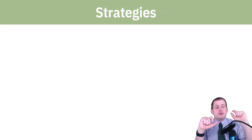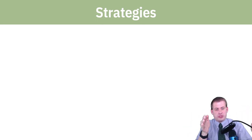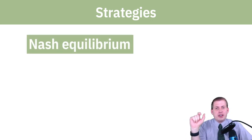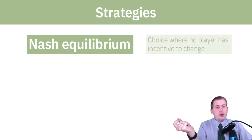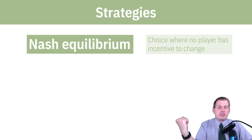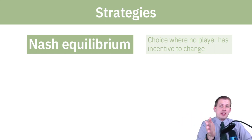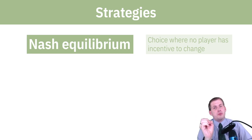When two people interact with each other, there are specific strategies and language about what they're supposed to choose. The main thing we care about is this idea of Nash equilibrium, which means it's a choice where no player has an incentive to change. If one person decides to choose option A, it's because that is their best option — option A is the best regardless of what the other person is going to do. That is kind of where people settle in their choices.